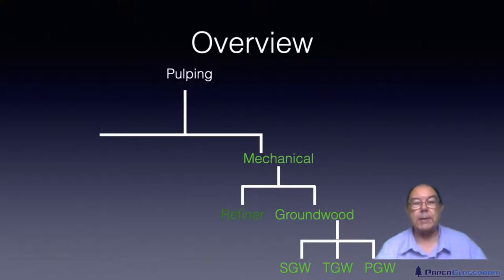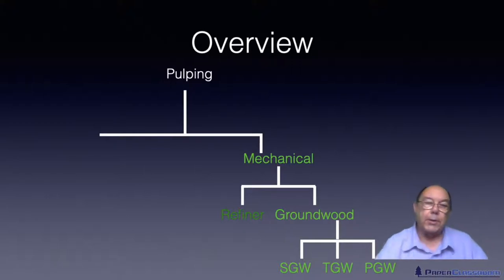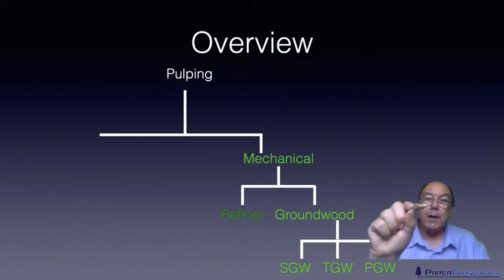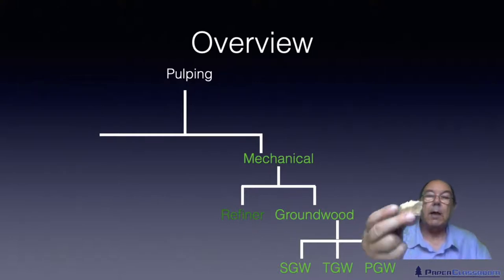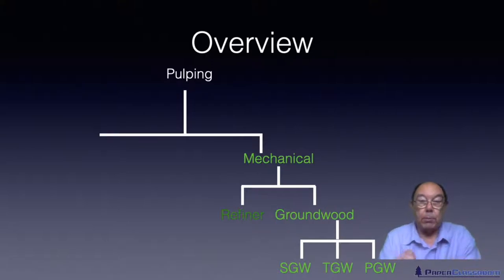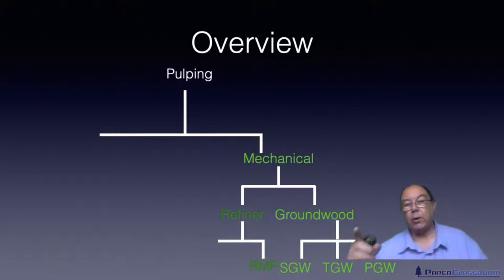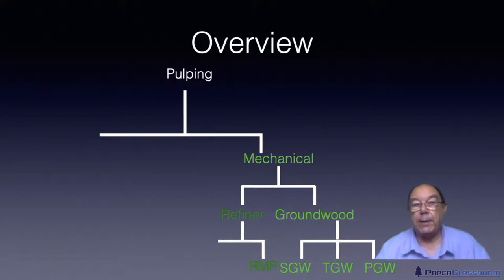All those ground wood pulping processes rely on using a whole tree trunk, but it's not very convenient. So all the other methods — the refiner method, the chemical method, and the hybrid method — rely on taking a tree trunk and bringing it down to chips, and then feeding these chips into the equipment. The first refiner process was called RMP — refined mechanical pulp. Rather than taking a tree trunk and feeding it against an abrasive surface, you take wood chips and feed them against an abrasive surface, the abrasive surface here being a disc refiner.